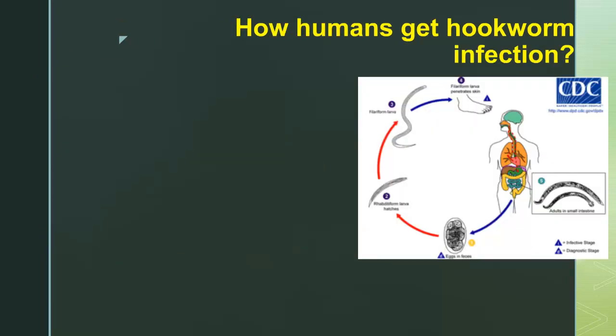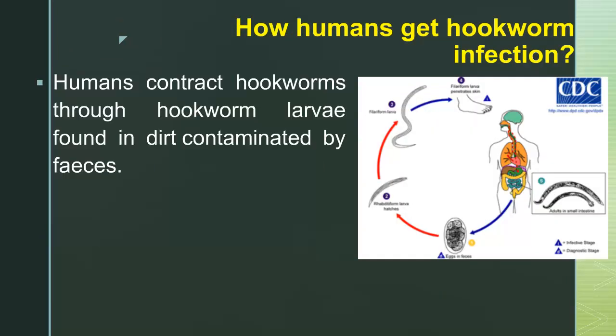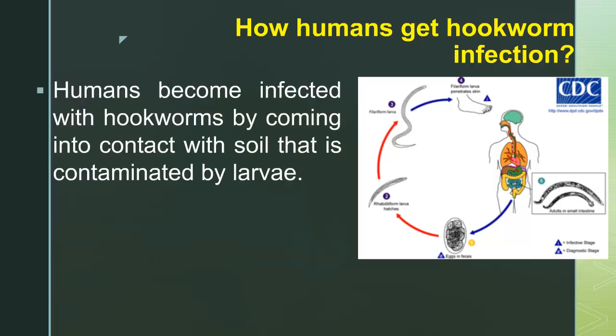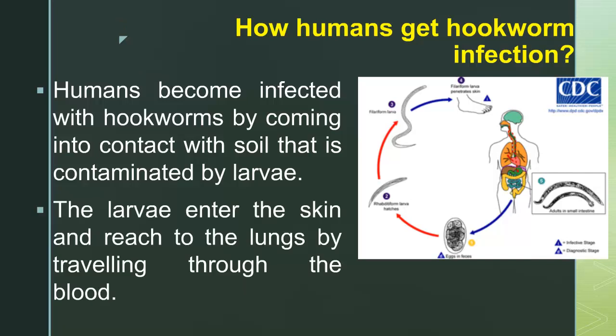How humans get hookworm infection. Humans contract hookworms through hookworm larvae found in dirt contaminated by feces. It mainly affects people in developing nations in the tropics and subtropics due to poor sanitation. Humans become infected with hookworms by coming into contact with soil that is contaminated by larvae.